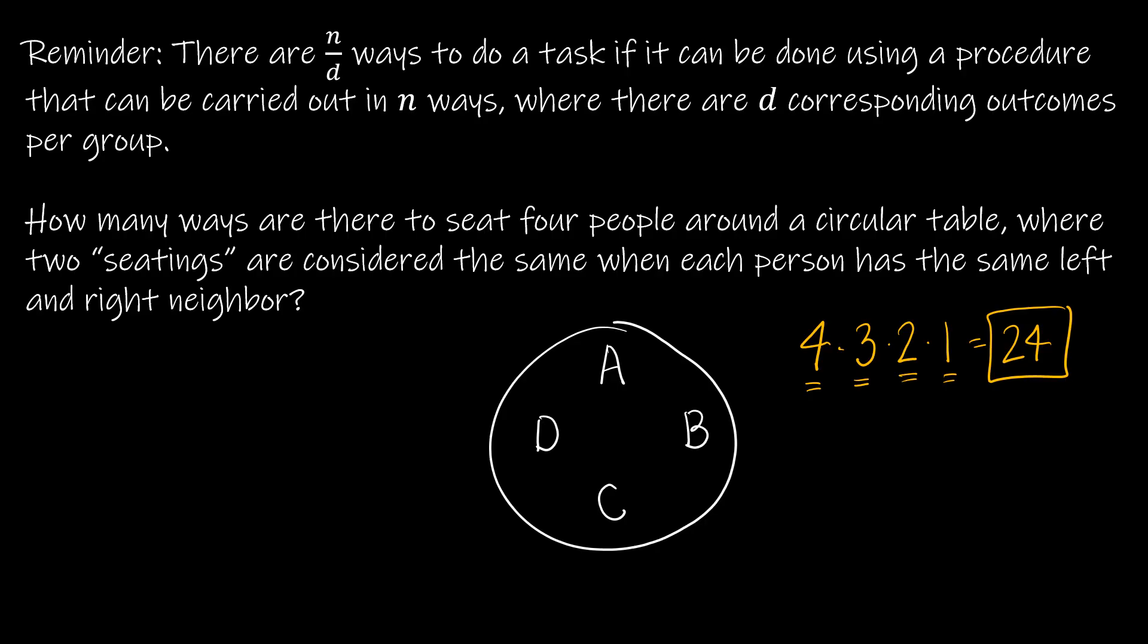The tricky part or where the division rule comes into play is it says two seatings are considered the same when each person has the same left and right neighbor. So essentially what we're saying is, yes, 24 is a good start. But let's say I put person one here and two here and three here and four here. Well, that's considered the exact same seating as if I would put one here and two here and three here and four here because essentially what I did is I took everything and shifted it to the right one position. Or perhaps I shifted it two positions. So one is here and two is here and three is here and four is here. And hopefully you're getting the idea. Lastly, I can shift three positions. So that's one, two, three, four.